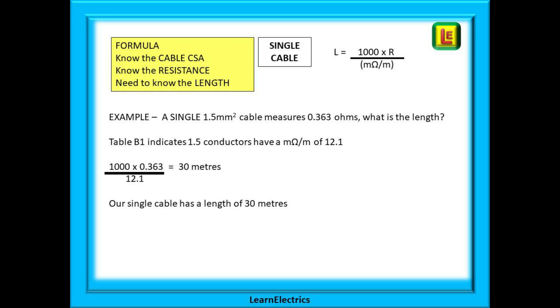In this example we have 1.5 millimeter copper and we measured 0.363 ohms with our test meter. 1000 multiplied by 0.363 and divided by 12.1 from table B1 will return an answer of 30 meters. So our single cable is 30 meters long.